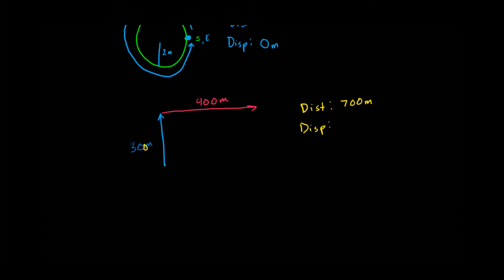But my displacement is just the straight line from where I started to where I ended. So, in this case, this would be my displacement. And, if you notice, this would just end up being a right triangle, kind of like a 3, 4, 5 triangle.